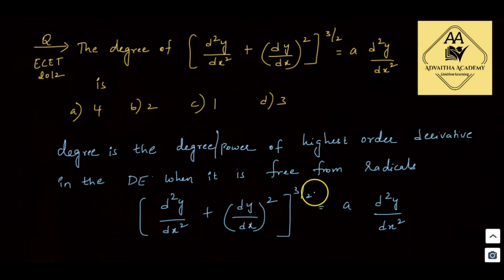Since the power 3/2 is a fraction (not a whole number), we need to remove the radical by squaring both sides.